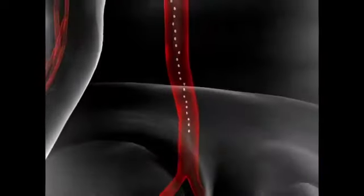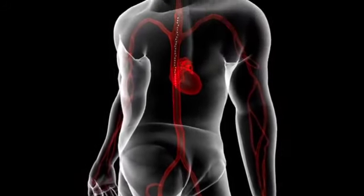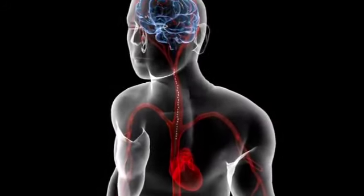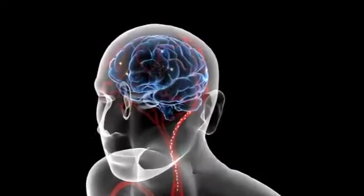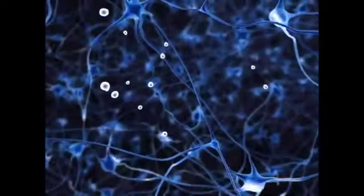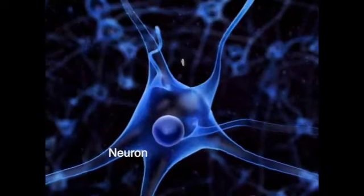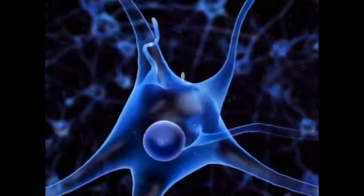Transported in the circulatory system, tachyzoites spread to other tissues and organs of the host, such as muscles and the brain. As the immune system of the host is activated and starts to respond, Toxoplasma will remain longer inside cells, such as neurons, and will start to convert into bradyzoites.